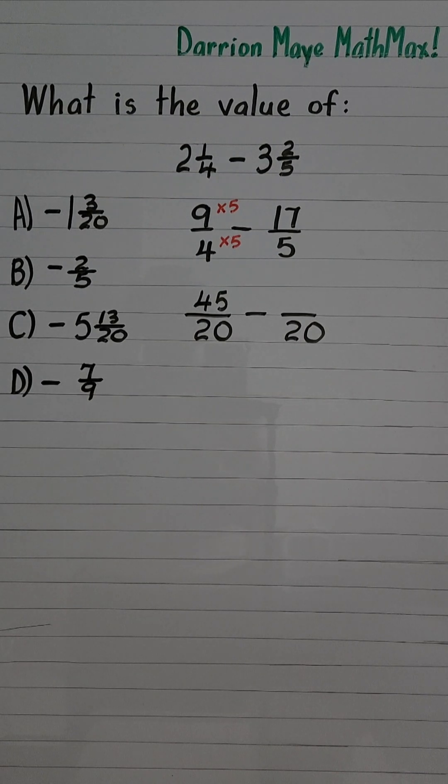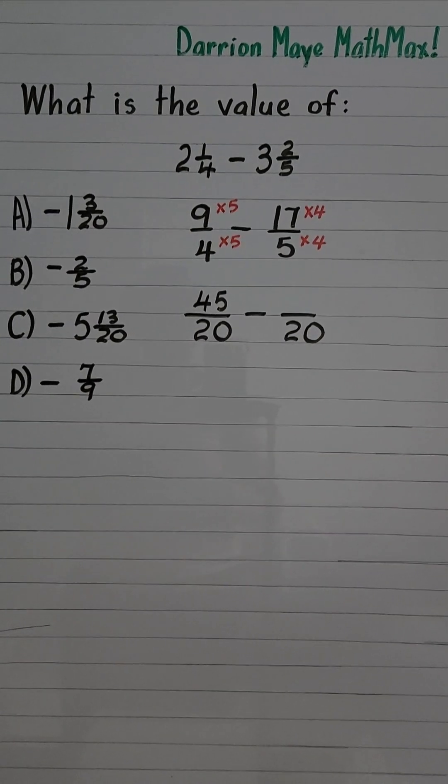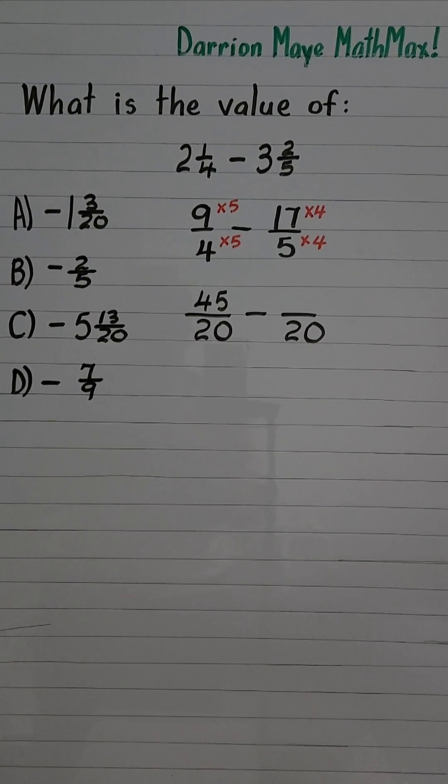How many times can 5 go into 20? That is 4 times so we multiply by 4. 17 times 4 is 68 and 5 times 4 is 20.